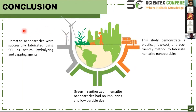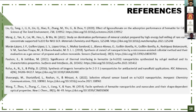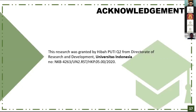In conclusion: first, hematite nanoparticles were successfully fabricated using Cajanus cajan leaf extract as natural hydrolysis and capping agents. Second, green-synthesized hematite nanoparticles had no impurities and low particle size. Third, this study demonstrates a practical, low-cost, and eco-friendly method to fabricate hematite nanoparticles. We would like to thank the Directorate of Research and Development, Universitas Indonesia, for granting us the opportunity to conduct this research.